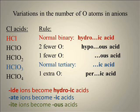If it's chloric acid but missing one oxygen, we call it chlorous acid, where '-ous' takes the place of '-ite.' And if we're missing two oxygens, it's hypochlorous acid.